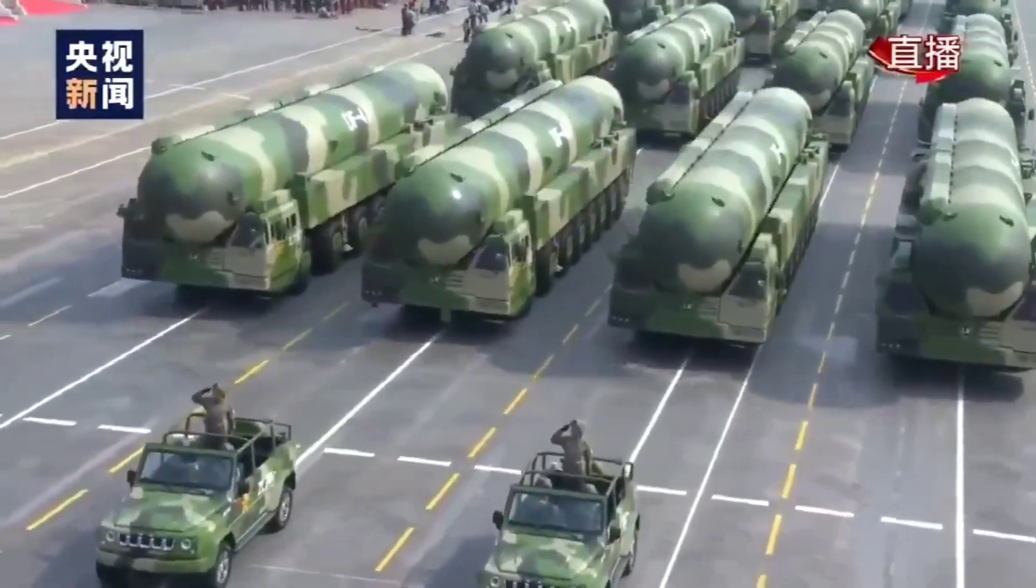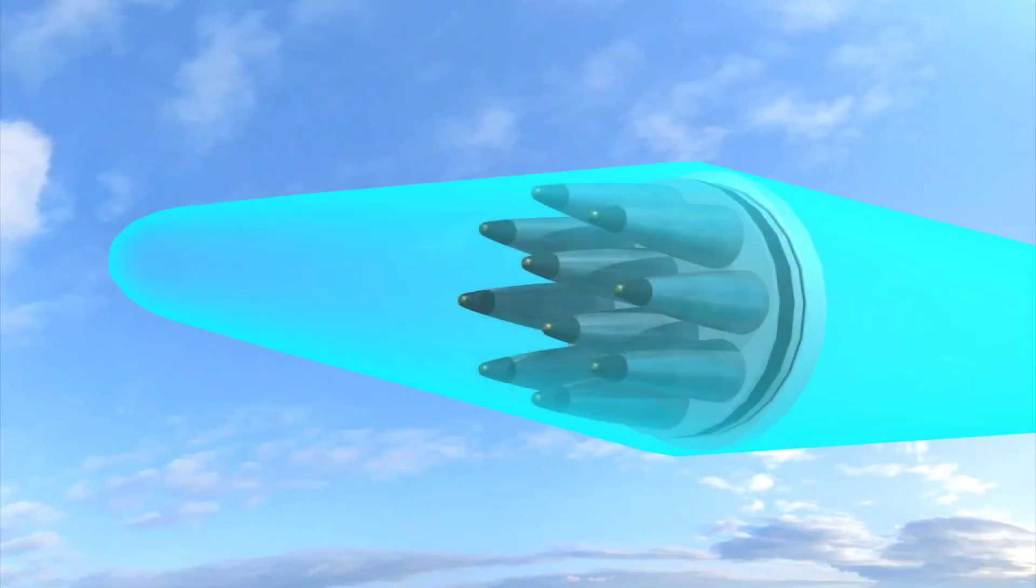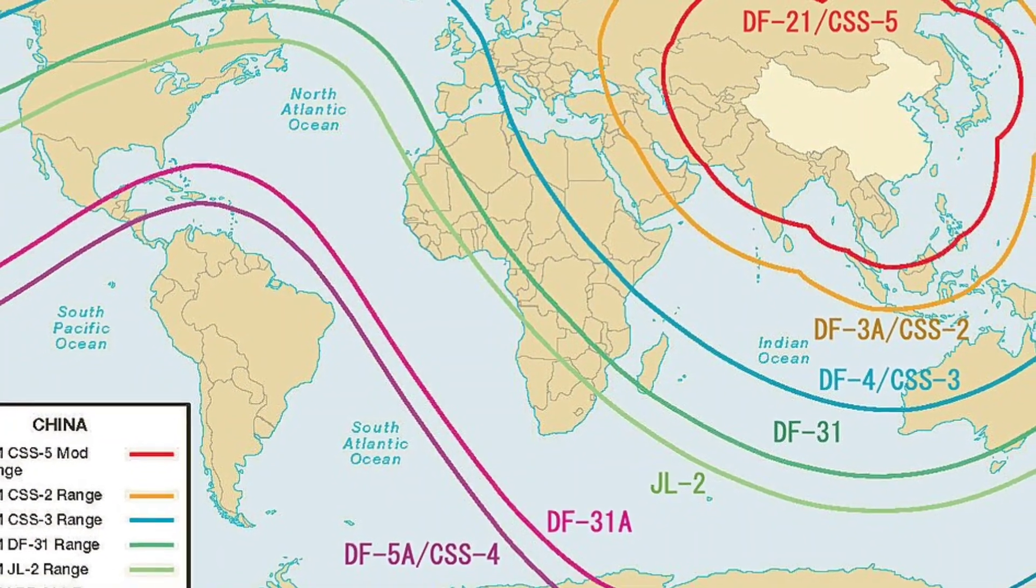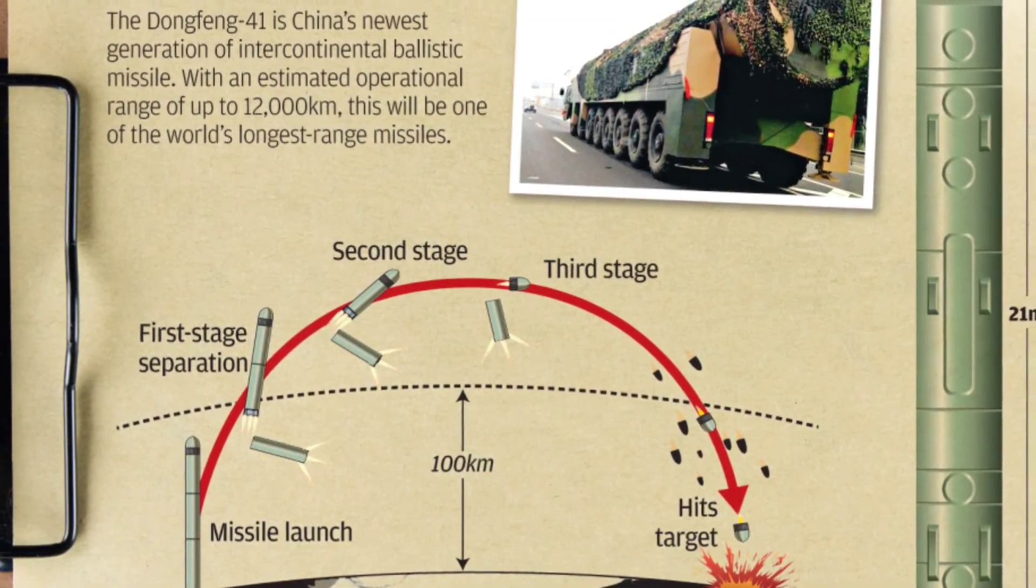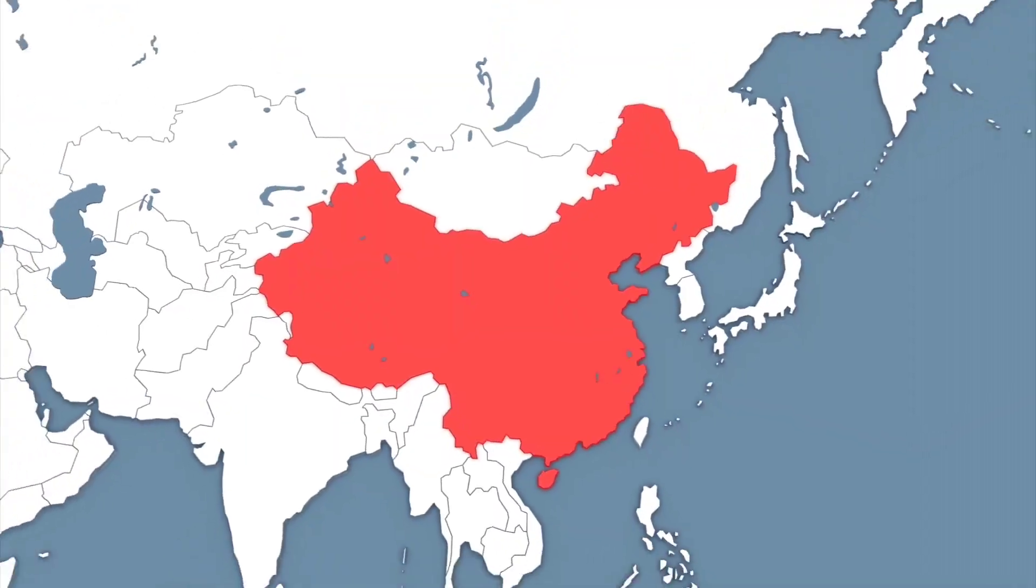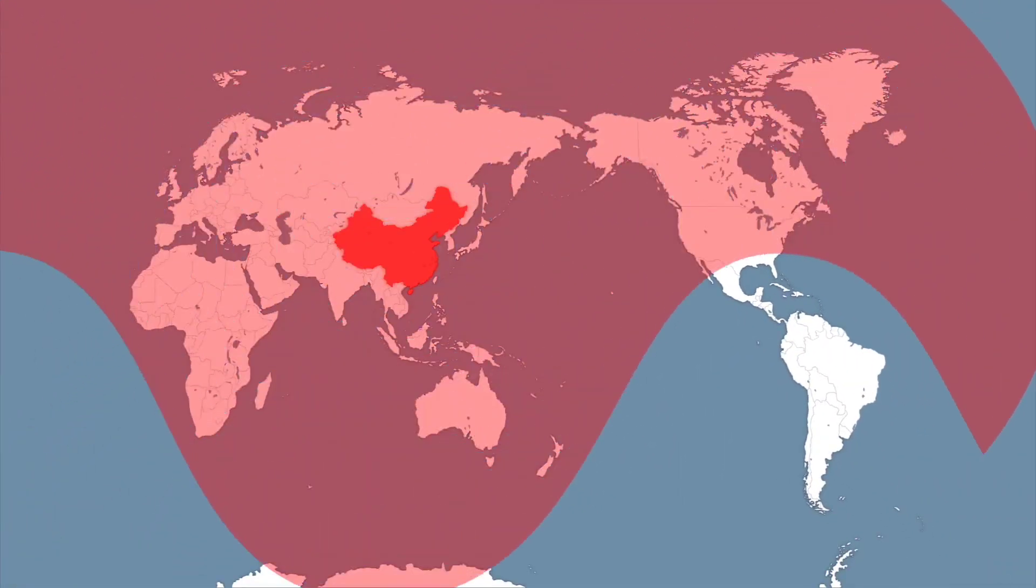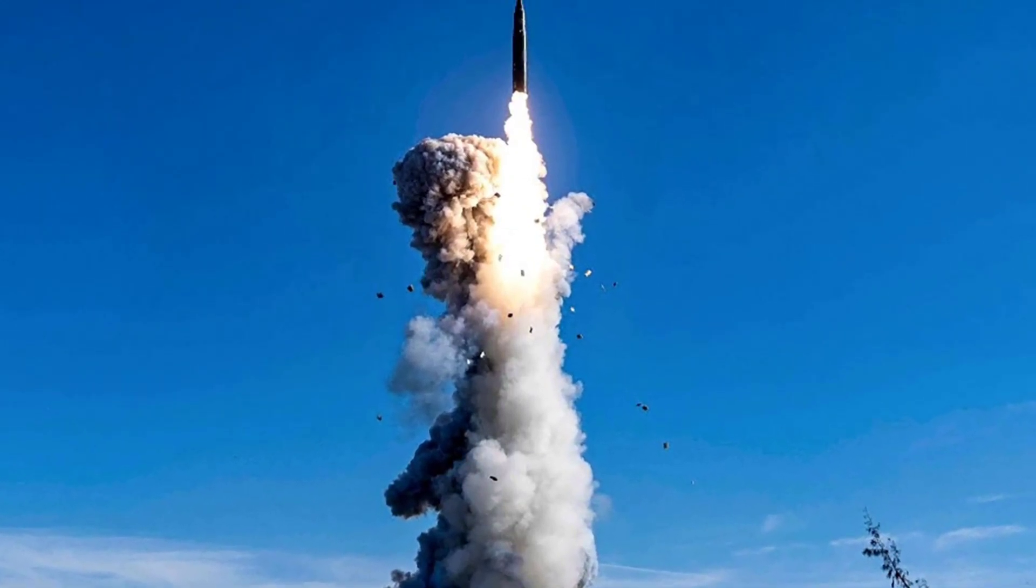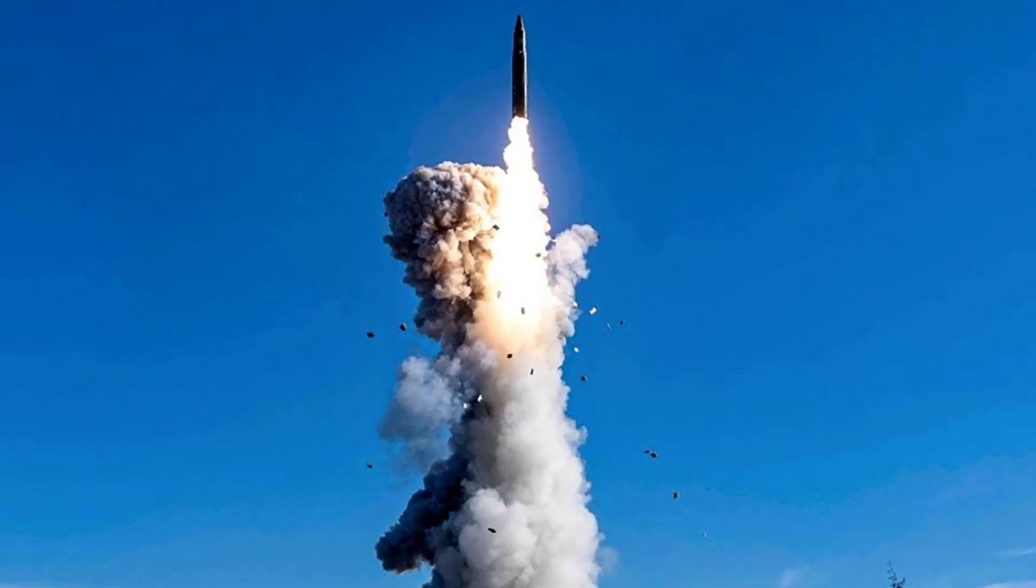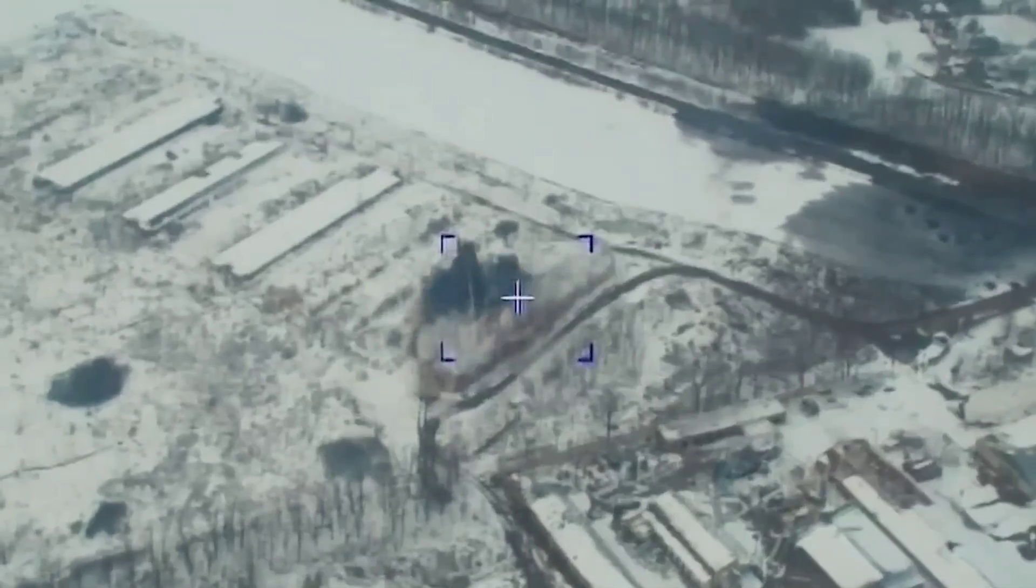This massive solid-fueled missile can carry up to 10 independently targeted nuclear warheads, each capable of striking separate locations across the planet. With an estimated range of over 15,000 kilometers, the DF-41 can reach any target on Earth, and when its warheads re-enter the atmosphere, they can reach speeds of up to Mach 25, which is 25 times the speed of sound.